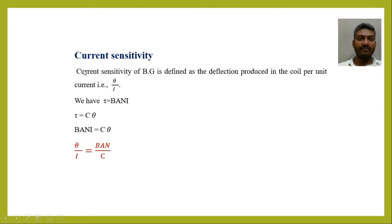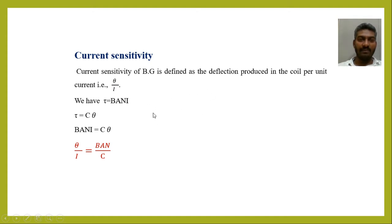Current sensitivity of a BG is defined as the deflection produced in the coil per unit current, that is θ/I. This can also be defined as the amount of current required to produce unit deflection on the scale when the scale is placed at a distance of 1 meter from the ballistic galvanometer. We have τ = BAN × I and τ = Cθ. Therefore, θ/I = BAN/C.